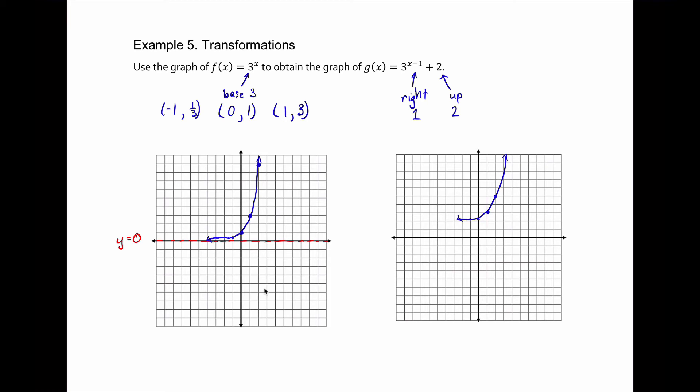Notice that this shift did move our horizontal asymptote, or horizontal asymptote was also shifted up, and it's now y equals 2. Or not 0, but y equals 2.